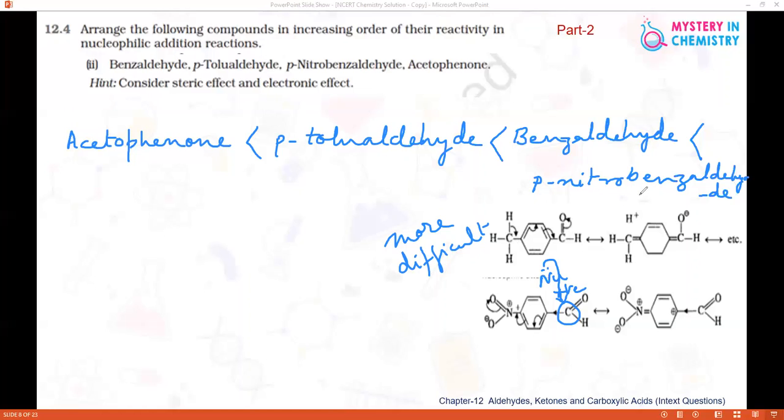Most reactive will be your paranitrobenzaldehyde, so everything you can compare according to the carbonyl carbon. Around the carbonyl carbon, if steric hindrance is more, then the reactivity will be less. At the same time, if this carbonyl carbon is less electropositive, then also it is less likely.